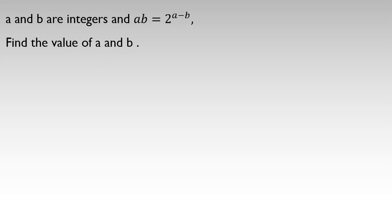When we want to solve this problem, if I rewrite the equation: AB equals 2 to the A minus B. I know 2 to the A minus B is always positive — 2 to any power is always positive. So AB is positive. So if you want to check the sign, A and B are either both positive or both negative.